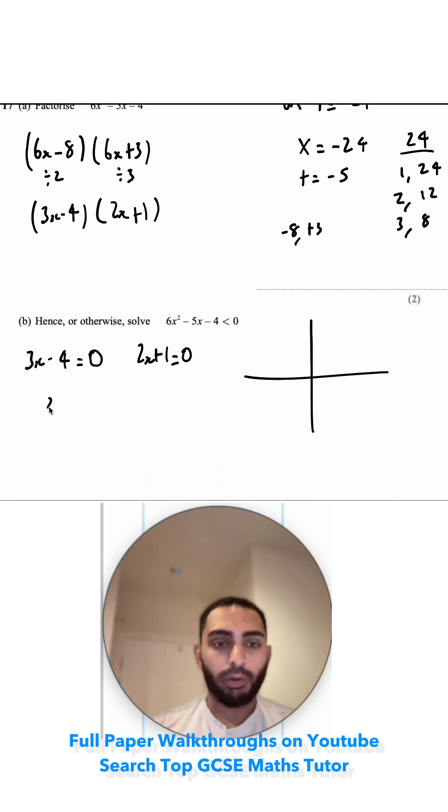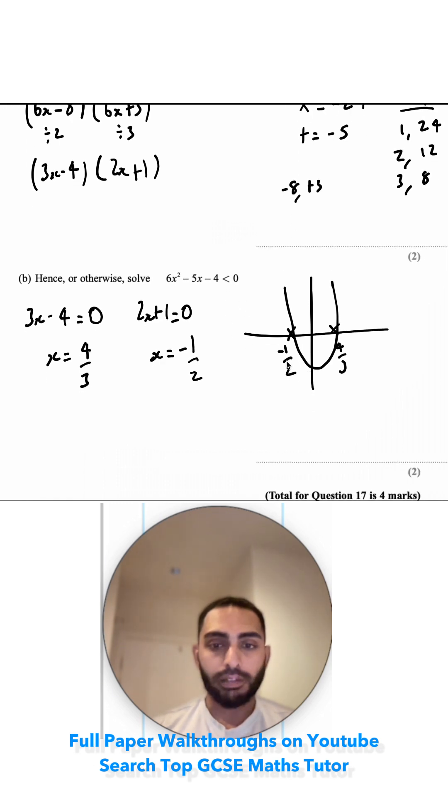If I solve this one, I get x is equal to 4 over 3. And here, x is equal to negative 1 half. So it's going to cross this graph at negative 1 half, which is about here. It's going to cross that 4 thirds, which is over here. Remember, we're looking for the points where it's underneath the x-axis. So it's between negative 1 half and 4 thirds. So the way we can write this is when x is greater than negative 1 half, and when it's less than 4 thirds.